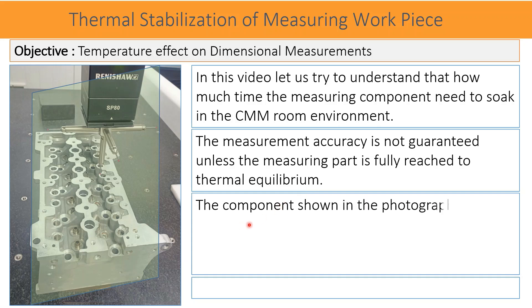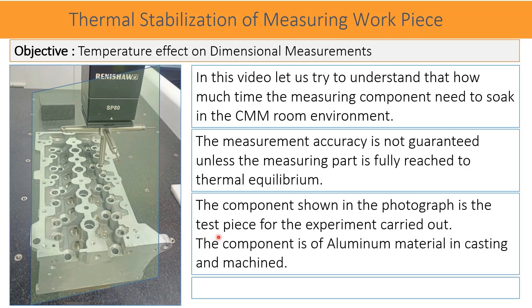The component shown in the photograph is used for the experiment. It is aluminum casting and machined. Please remember that the thermal expansion coefficient index of aluminum material is 23 micrometers per meter per degree centigrade.